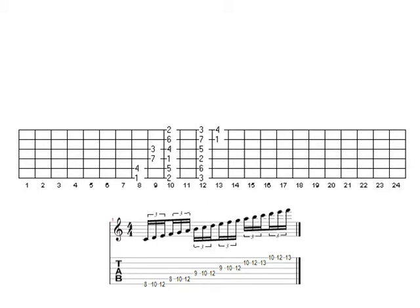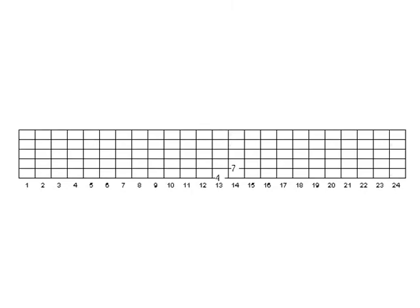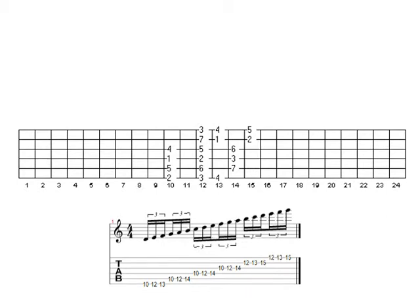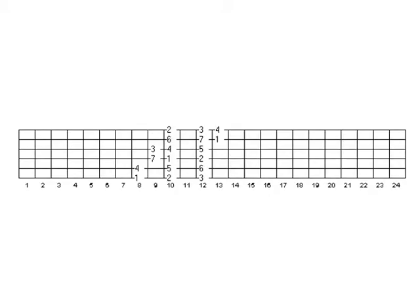Here's the complete pattern displayed with scale degrees and as note names. Three-note-per-string pattern two starts on the second of the scale. This pattern consists of a perfect fourth, another perfect fourth, then our augmented fourth, and the rest are all perfect fourth shapes. Displayed as scale structure and as note information. Something really cool about learning three-note-per-string major scale patterns this way is that once you know one pattern completely, when you go to the next pattern you actually already know two-thirds of that second pattern.